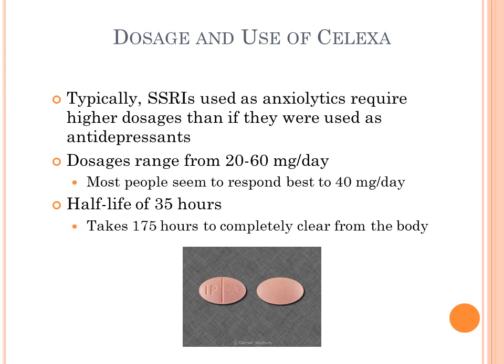As far as dosage and use for Celexa, typically when SSRIs are used as anxiolytics they require slightly higher dosages than if used as antidepressants. For Celexa, dosages usually range from about 20 to 60 mg per day as an anxiolytic, though most people seem to respond best to about 40 mg a day. The half-life of the drug is about 35 hours, meaning it would take approximately 175 hours to completely clear from the body.